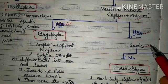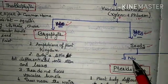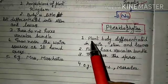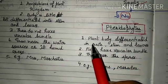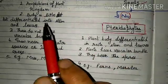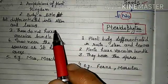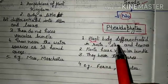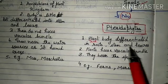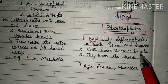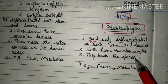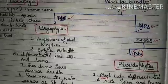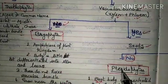If a vascular bundle is present, we check for seeds. If there is no seed, the plant belongs to Pteridophyta. These are the first plants where you can see true roots, stems, and leaves. They have a vascular bundle and reproduce via spores. Examples include fern and Marsilea. Thallophyta, Bryophyta, and Pteridophyta all fall under Cryptogamia because their reproductive organs are inconspicuous.